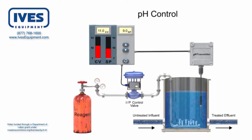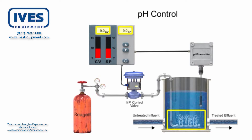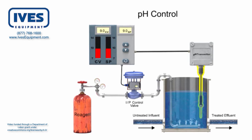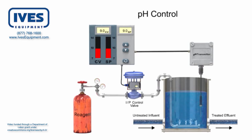As the increased carbon dioxide mixes with the influent, the pH is lowered in a controlled manner. Reaching the setpoint, the carbon dioxide flow is minimized and the process is continually monitored for variation. The effluent is the treated water that is discharged out of the tank. The process continues to provide the lime-softened water at the desired pH level.